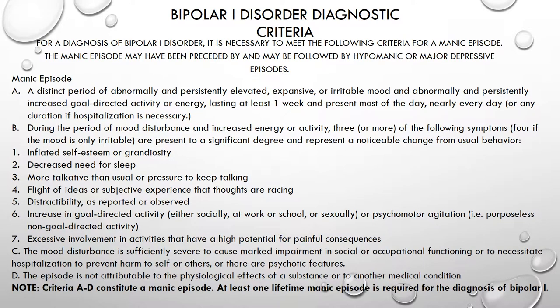Here is the diagnostic criteria for bipolar 1 disorder. For a diagnosis of bipolar 1, it's necessary to meet the following criteria for a manic episode. The manic episode may have been preceded by and may be followed by a hypomanic or major depressive episode. The criteria for a manic episode is a distinct period of abnormally and persistently elevated, expansive, or irritable mood, and abnormally or persistently increased goal-directed activity or energy, lasting at least one week and present for most of the day, nearly every day, or any duration if hospitalization is necessary.